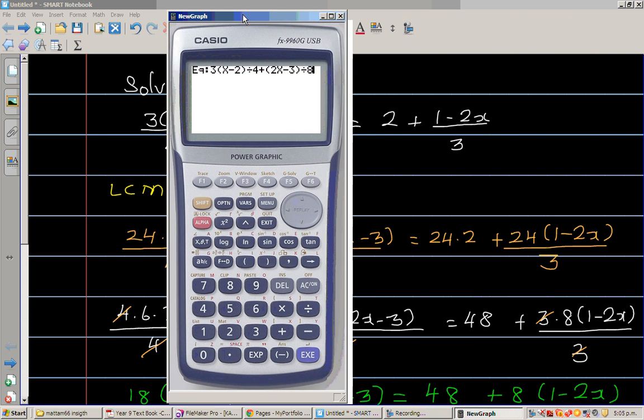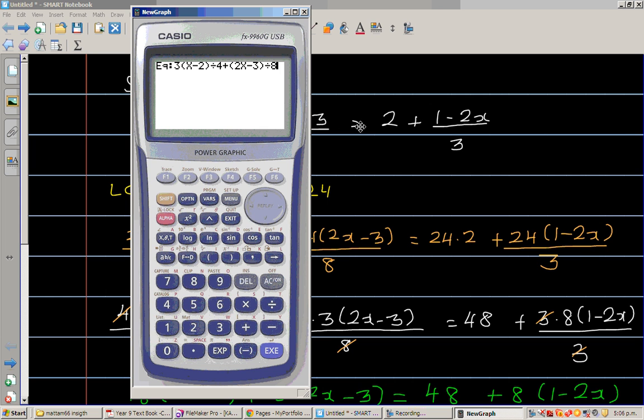So let me scroll this on this side. Then you've got an equal to sign. So you go shift. Your equal to sign is here. So you press shift, equal, 2. Plus, again in the bracket, 1 minus 2x. Close the bracket. Divide it by 3.